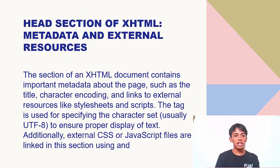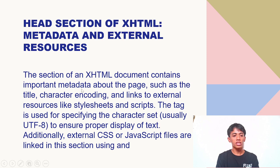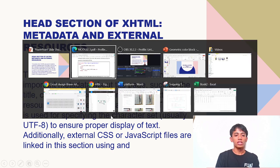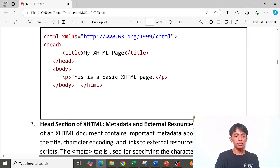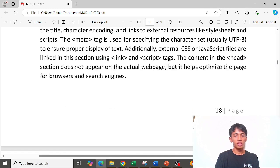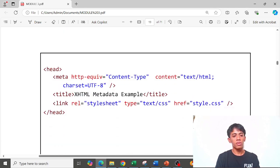Next is the head section of XHTML — metadata and external resources. The head section of an XHTML document contains important metadata about the page such as the title, character encoding, and links to external resources like stylesheets and scripts. Here is an example of code showing the meta tag with content type.